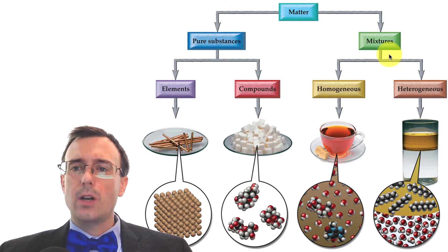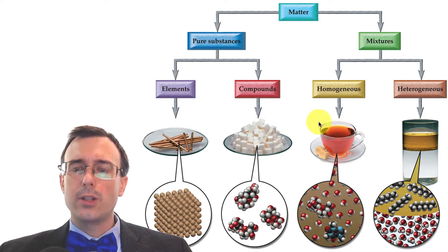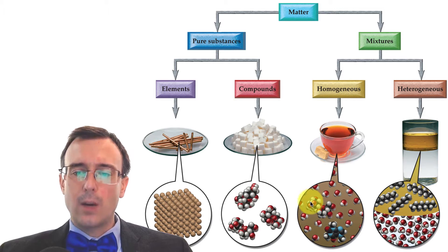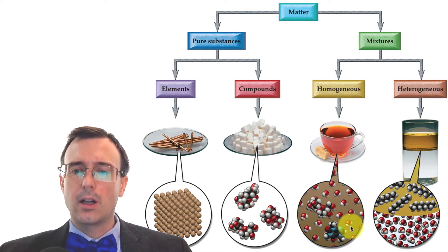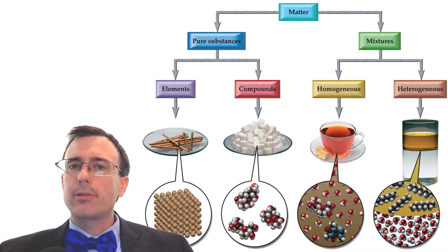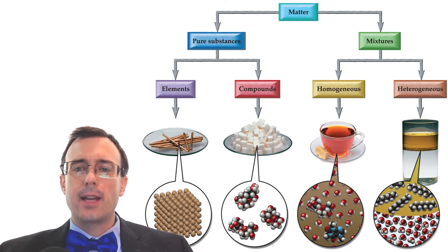Mixtures also come in two different varieties: homogeneous mixtures and heterogeneous mixtures. Homogeneous mixtures are completely even throughout — you can't tell that there's more than one different thing in there, but there is. You can see in the close-up that you've got one compound here, another compound here, another compound here, all together in your homogeneous mixture. A heterogeneous mixture has multiple layers.